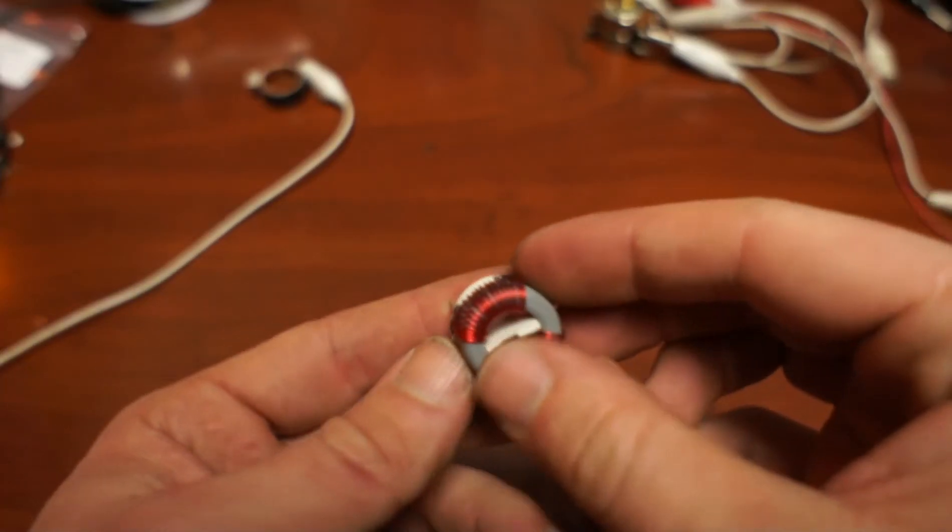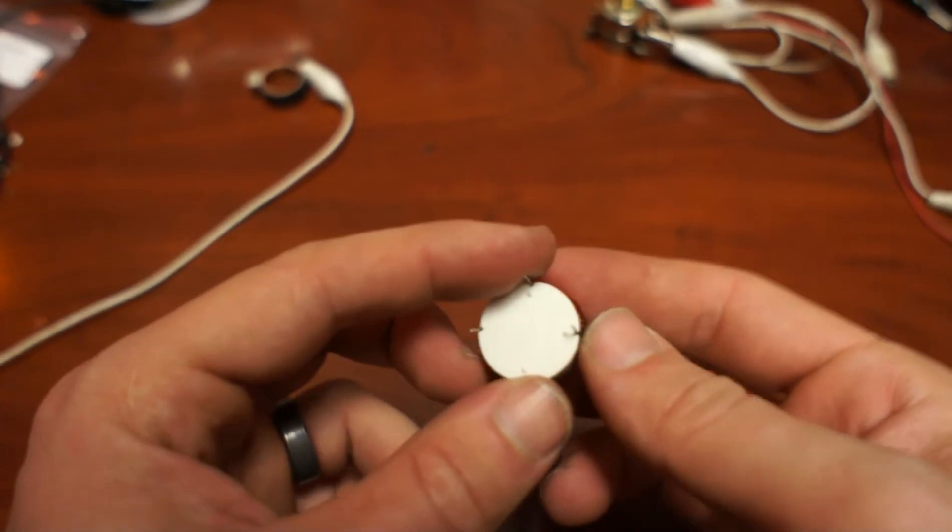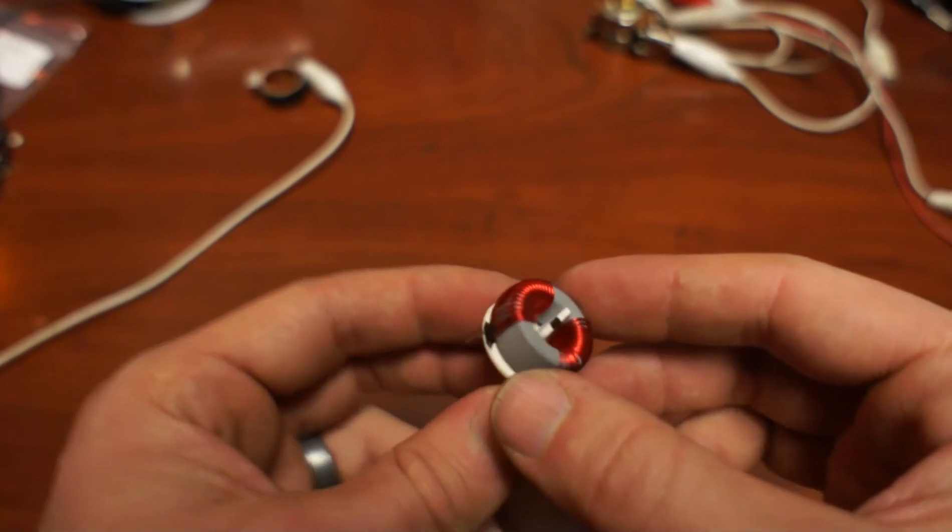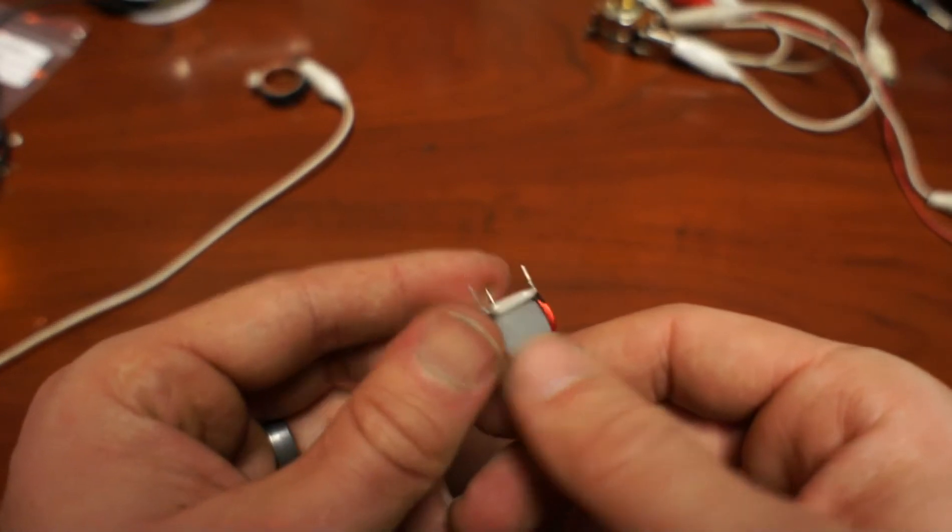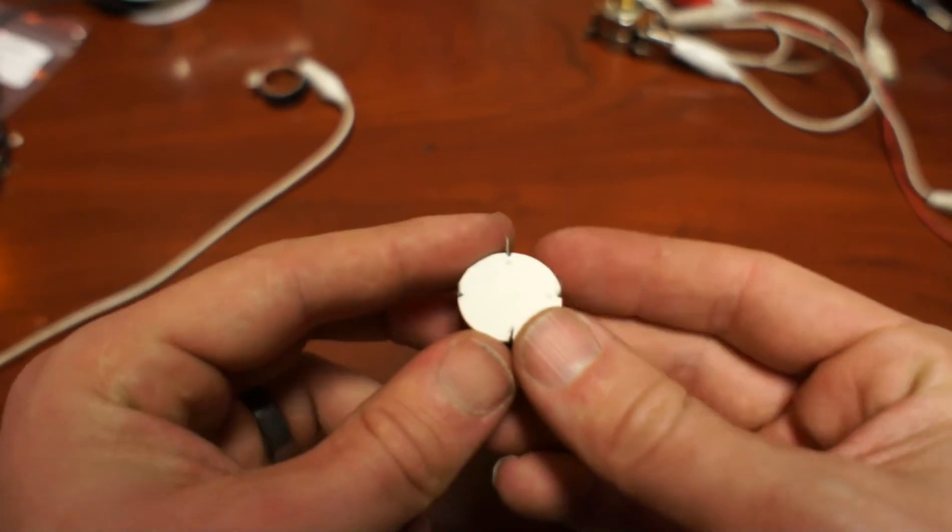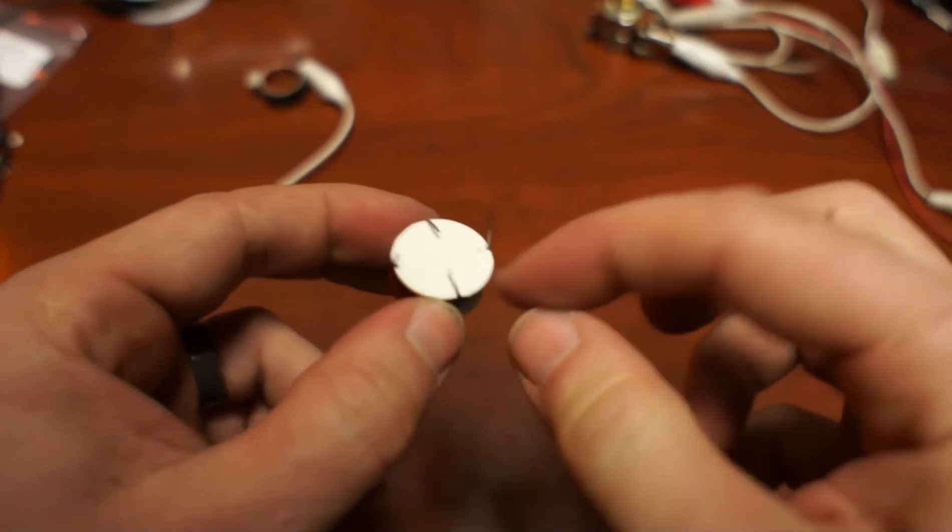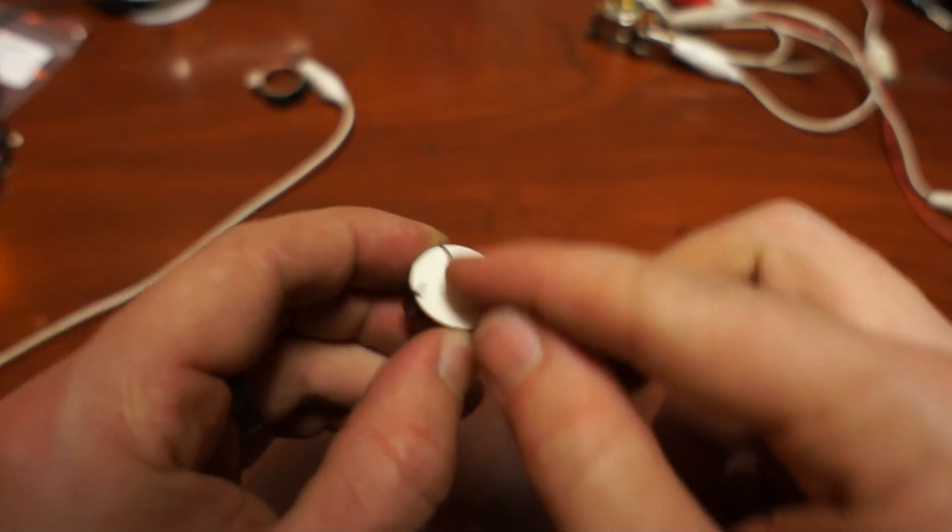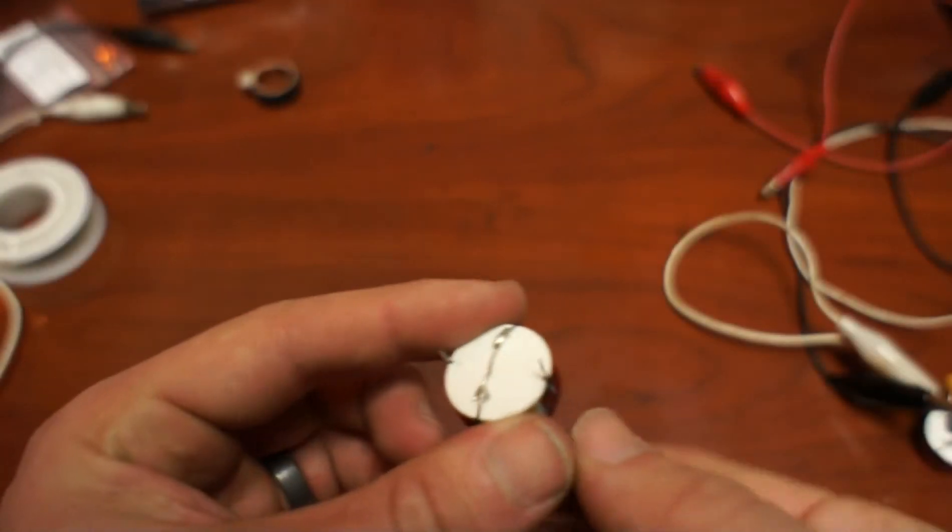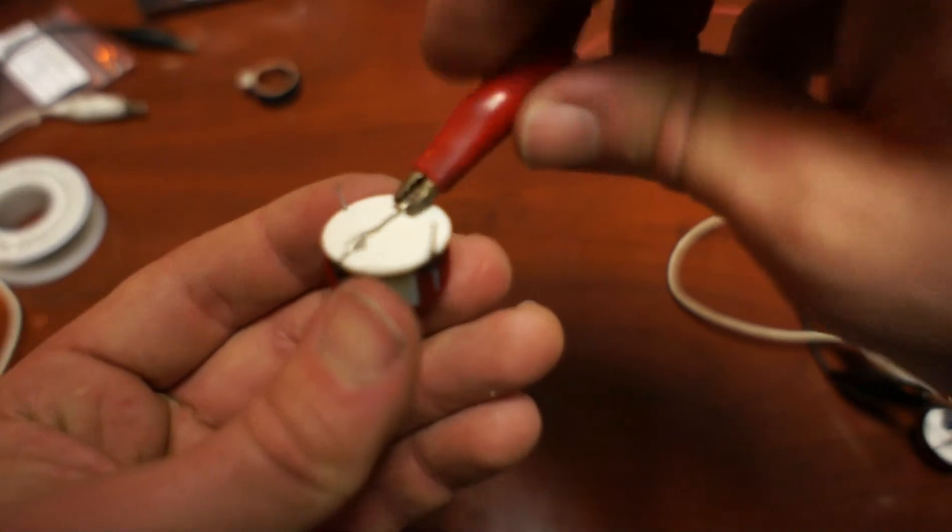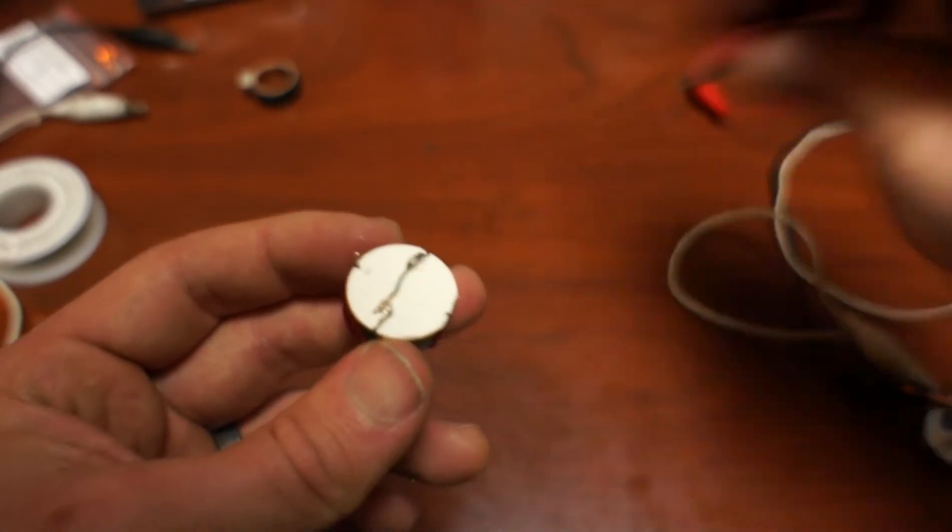We'll start with the toroid here. It's just a ferrite from Electronic Goldmine. I'll go ahead and post the exact part number and a link to order this on laserhacker.com. Basically to start with, all we have to do is take these two leads here, bend them toward each other, and then we will solder a little piece of wire between these points. That will be the positive connection to our circuit.